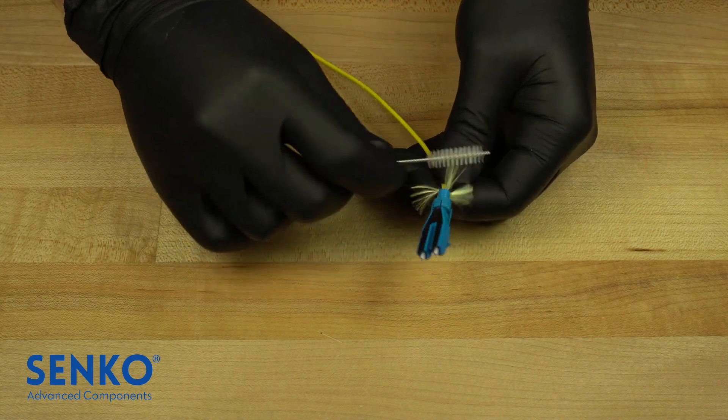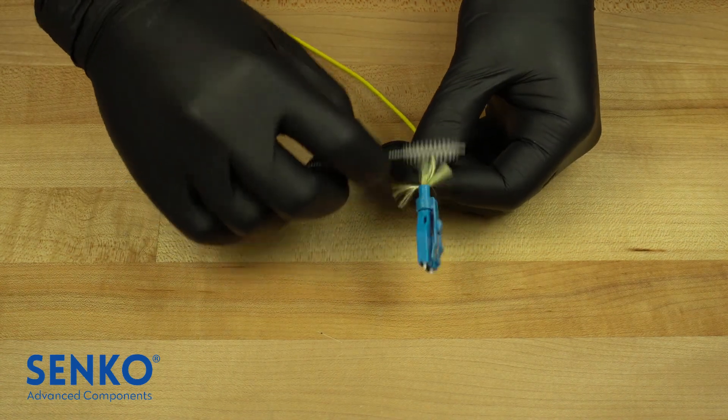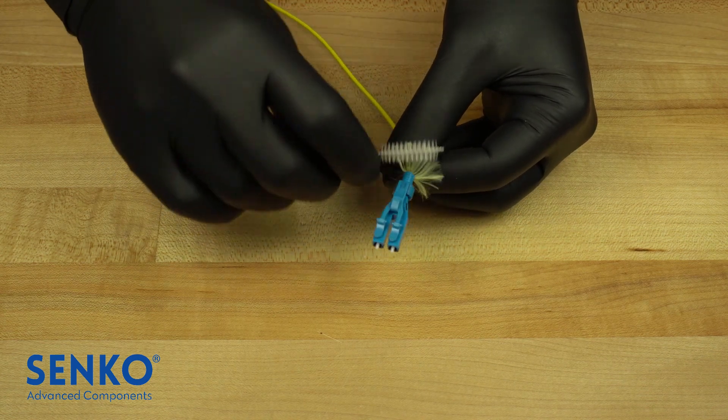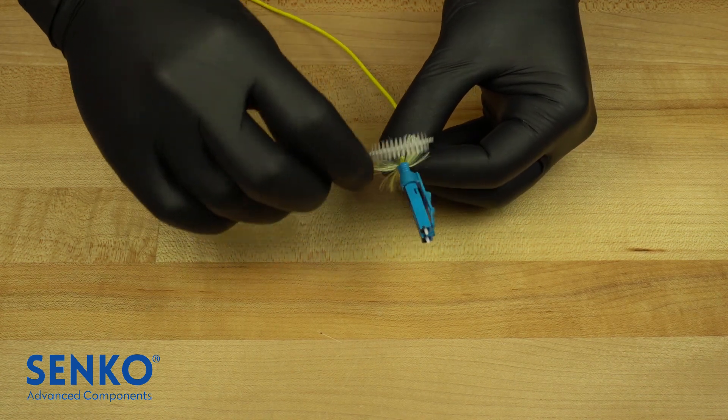At this point, we like to use a small brush to evenly spread the aramid yarn around the back post. This is because the crimp traps the aramid yarn giving the connector all of its tensile strength.